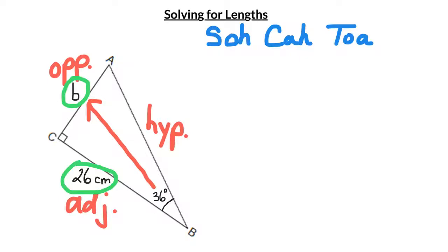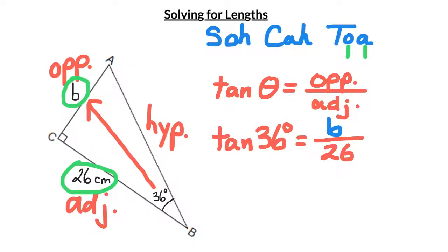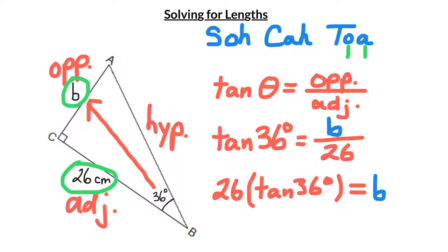So I want the opposite and I have the adjacent, so I'm going to look for the ratio that uses both of those. Sine uses opposite and hypotenuse, so I'm not going to use that. Cosine uses the adjacent and the hypotenuse, so I'm not going to use that one either. The tangent ratio uses both opposite and adjacent, so that's the one I'm going to use. The tangent of the reference angle is equal to the opposite divided by the adjacent, so I'm going to plug in the numbers that I know and solve for the one that I don't. My reference angle is 36 degrees, my adjacent side is 26 centimeters, and the opposite side is B, which I want to solve. I rearranged my equation to get B isolated, and if you have a scientific calculator, you can type that in just the way it looks, and you'll get an answer of approximately 18.9 centimeters.